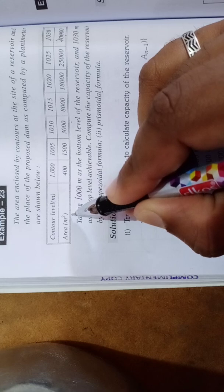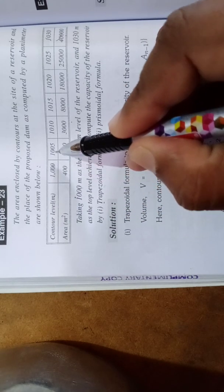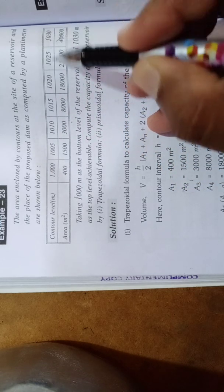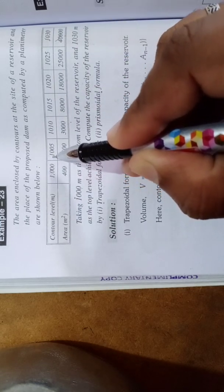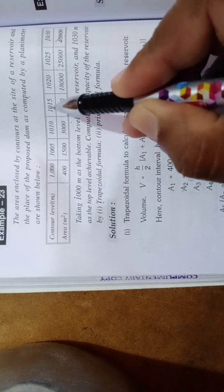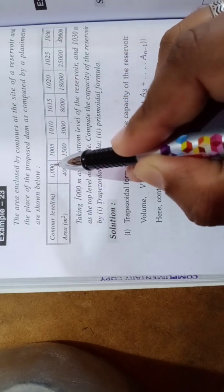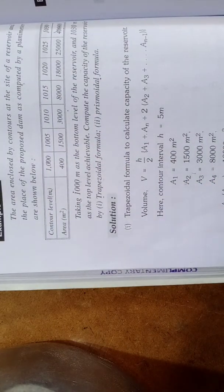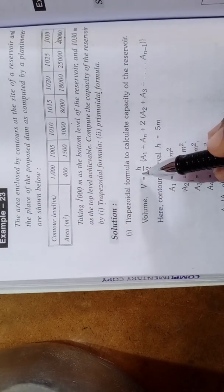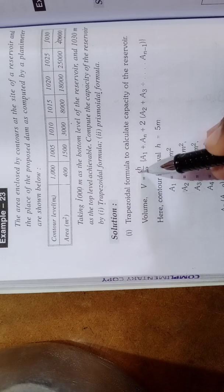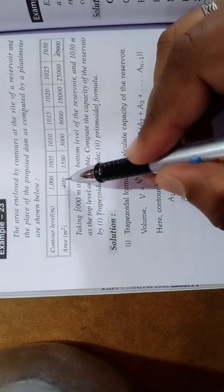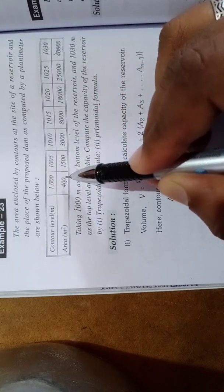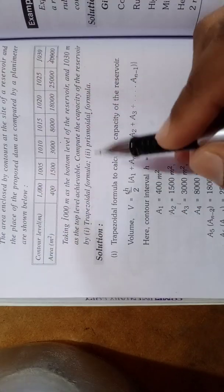Here the contour levels are given and the area is given in square meters. The values are 1000, 1000, 5000, 10000, 15000, 20000. There is an interval of five everywhere, so the contour interval is five. This five will be substituted in h. These are the areas in square meters.